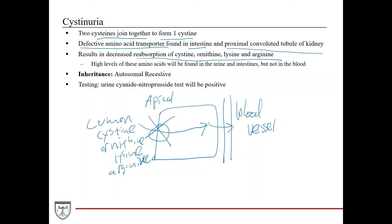High levels of these amino acids will be found in the urine due to the proximal convoluted tubule dysfunction, and also in the intestinal lumen — they will not be found in the blood. This is autosomal recessive inheritance. Diagnosis is made with a urine cyanide nitroprusside test, which will be positive.